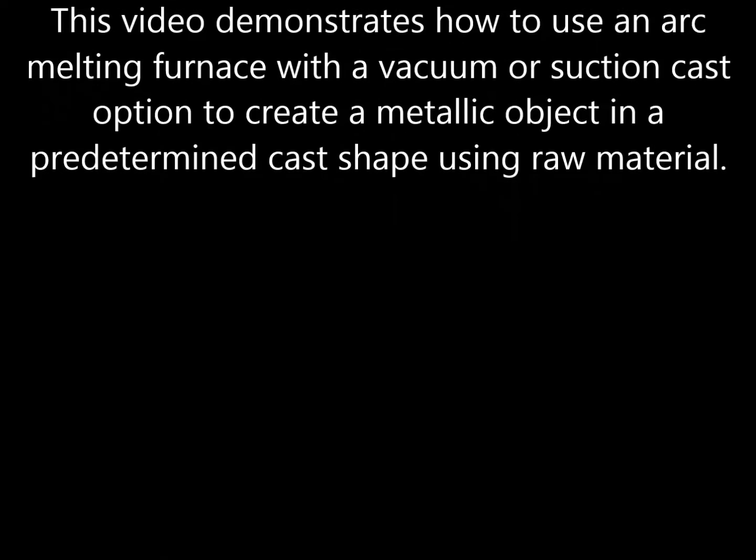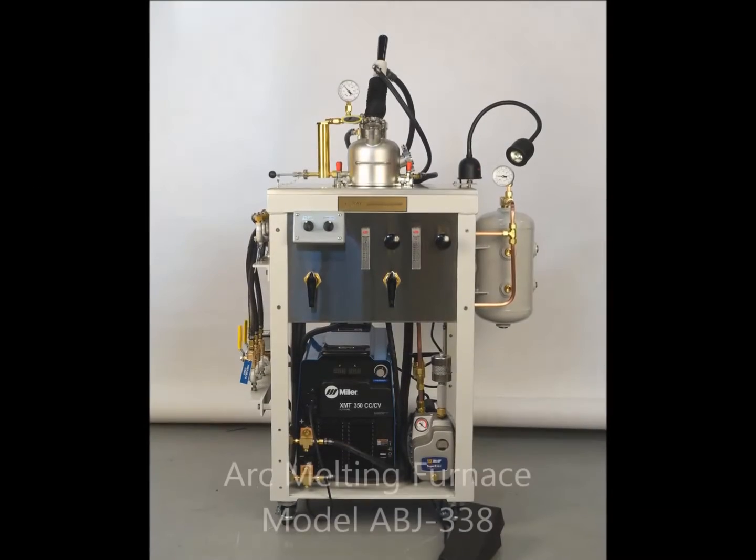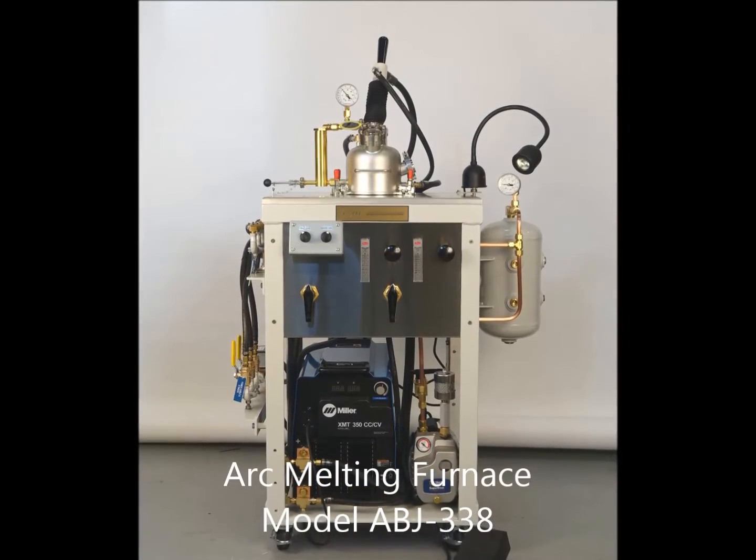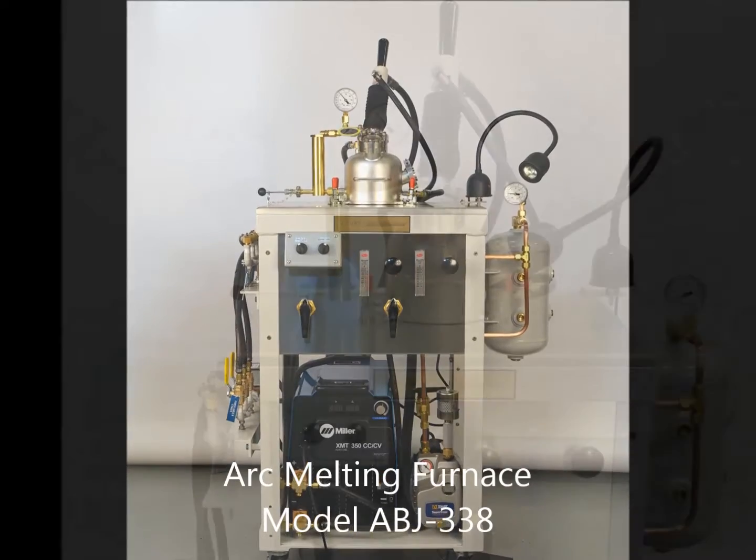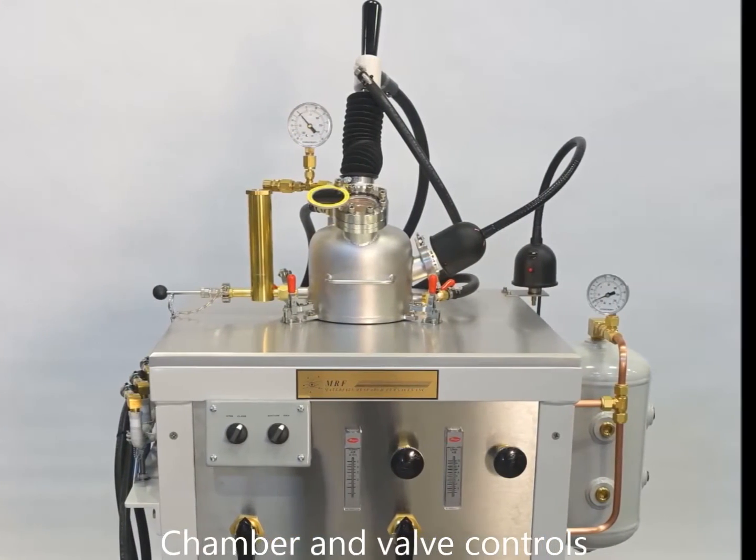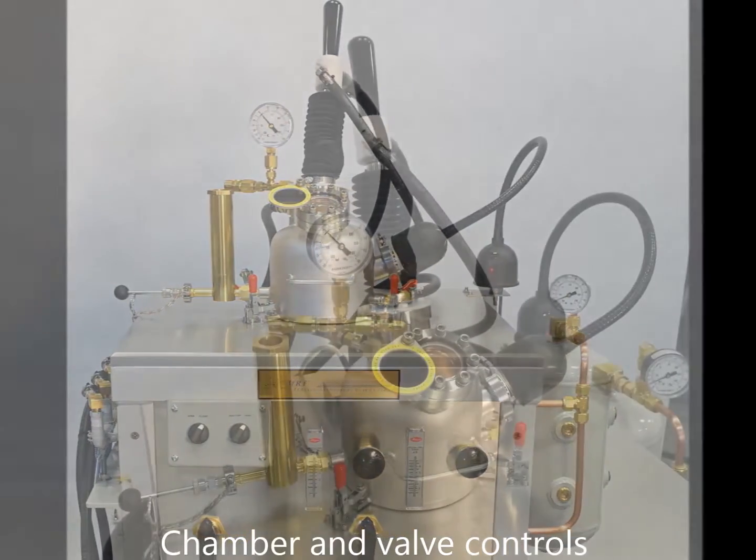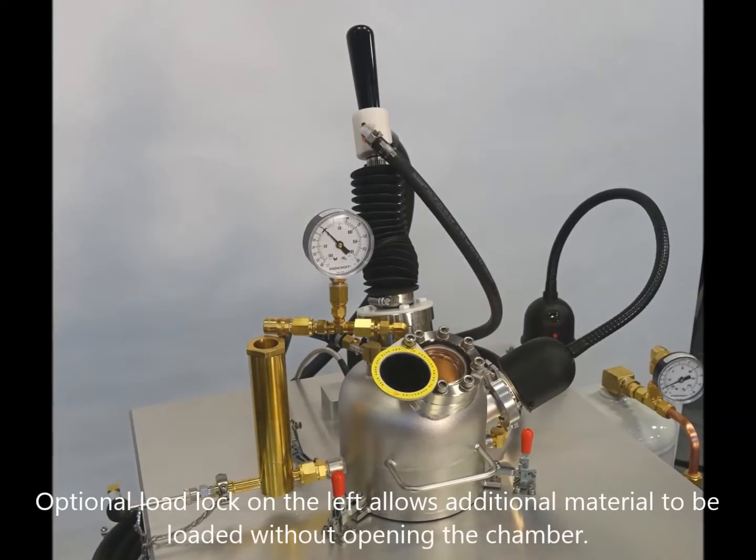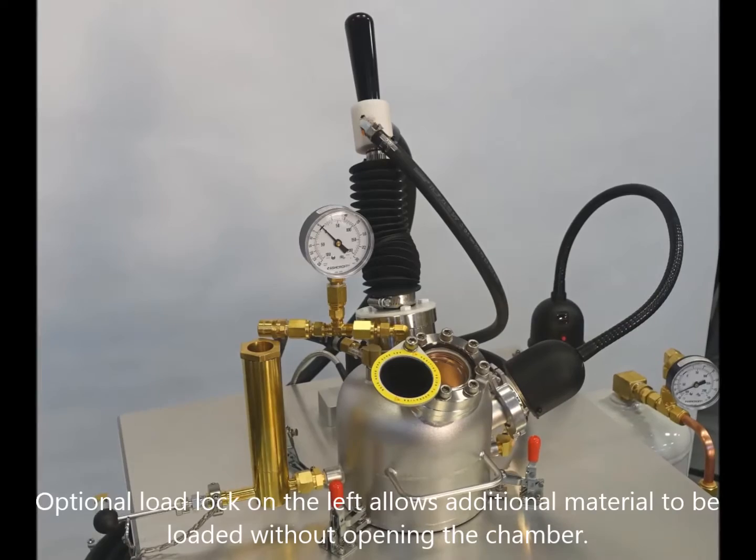Today we'll be going over our vacuum suction casting with our ArcMelt model ABJ338. The 338, with its sleek and simple design yet durable construction, is easy to use and understand. Its small footprint and many options make it a perfect fit for laboratories and universities worldwide.